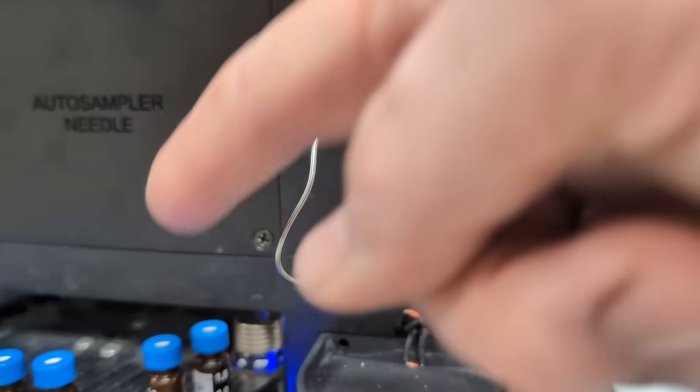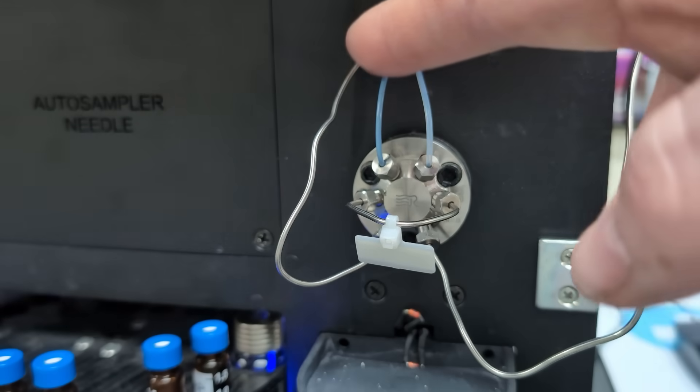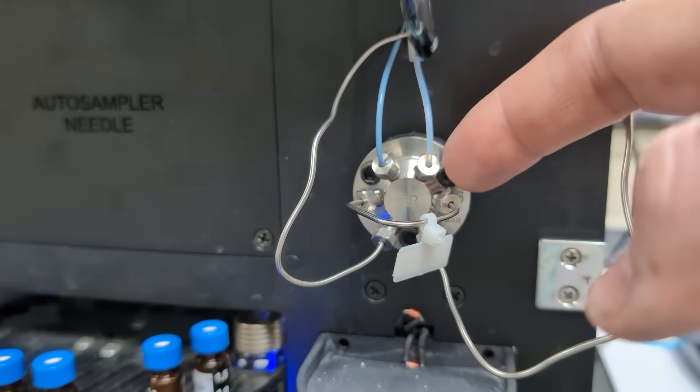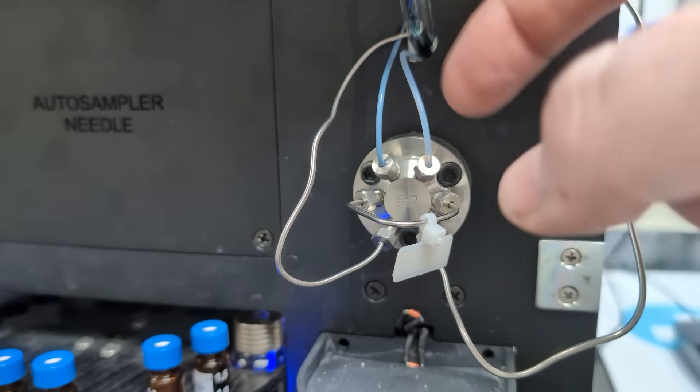You can see we have our injection valve here with some ports on it. Coming down this line here that comes from our needle, from our samples over here, through the needle, around the sample loop, and up on our sampling syringe side.